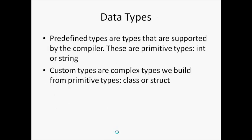Data types. The pre-defined data types are types that are supported by the compiler. These are the primitive data types, such as int or string. Custom types are the complex data types we build from primitive types, such as class or struct.